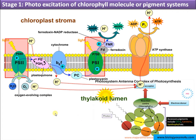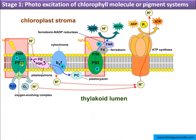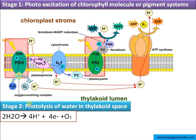When electrons are ejected from photosystem 2, there is an electron hole or gap in photosystem 2 that must be refilled. This triggers photolysis of water, which occurs in the thylakoid lumen, where the water molecule splits to form protons and electrons with the release of oxygen. These protons refill photosystem 2, help create a gradient in the thylakoid lumen, and the oxygen released is the oxygen produced during photosynthesis.